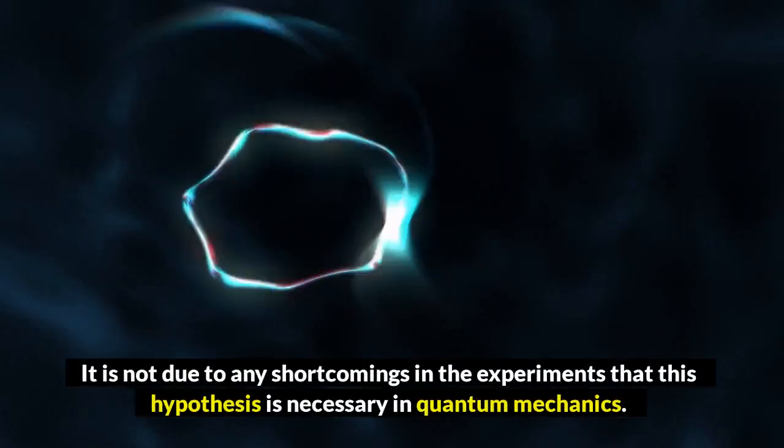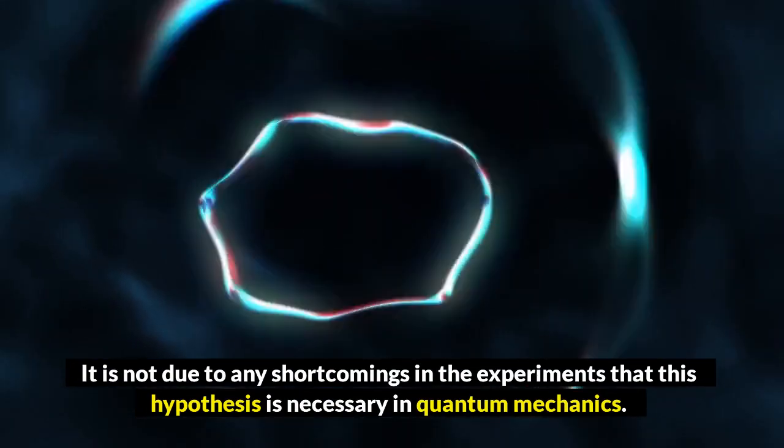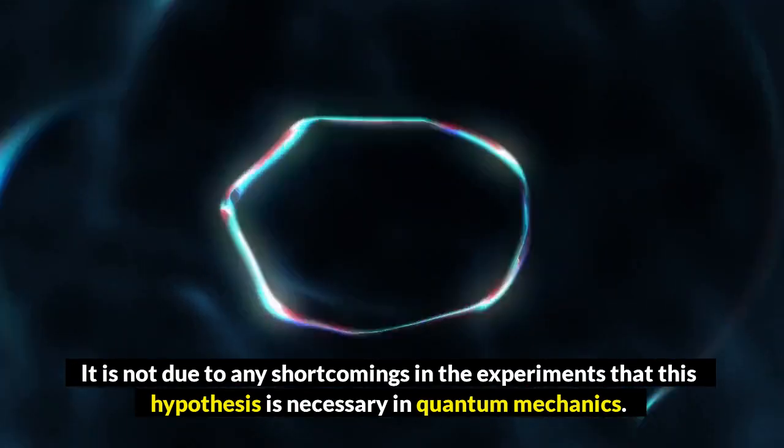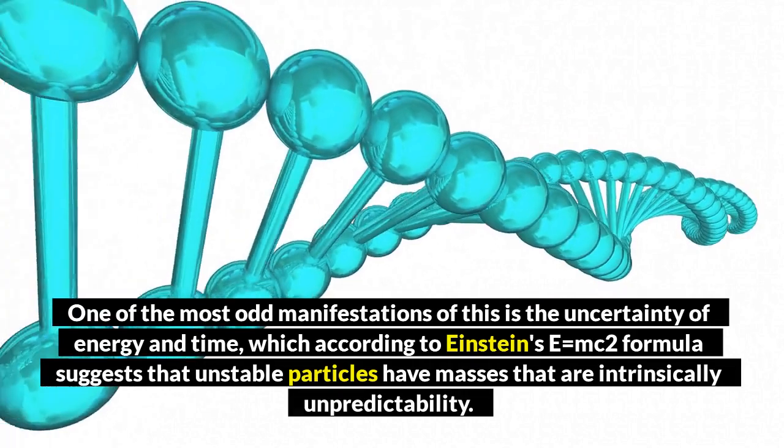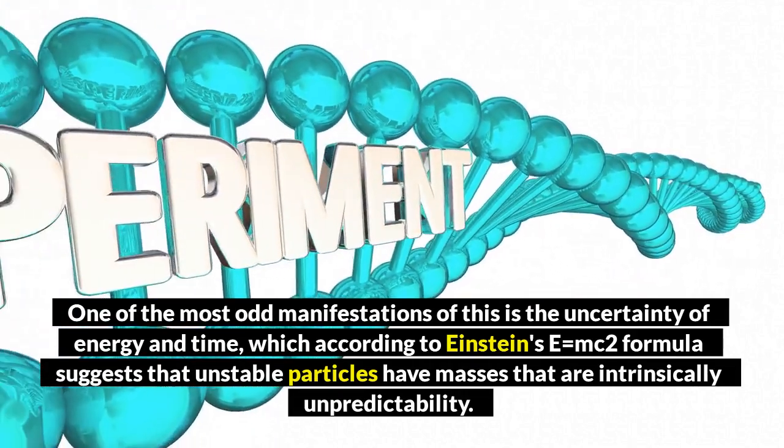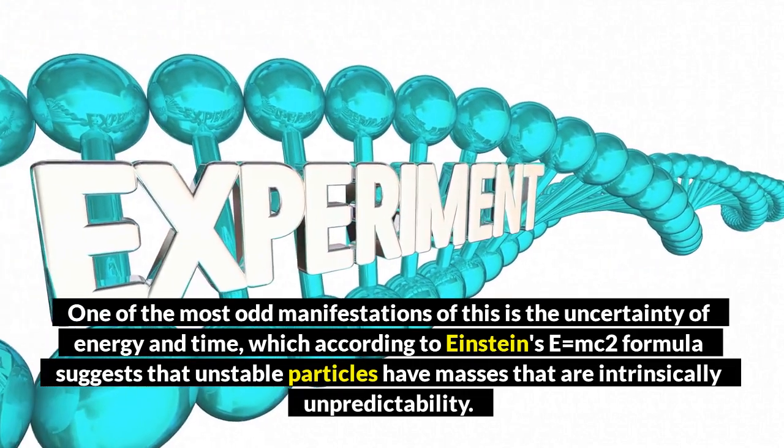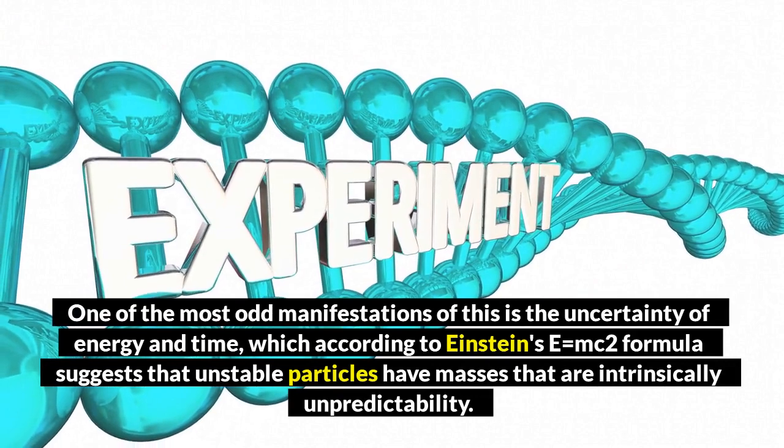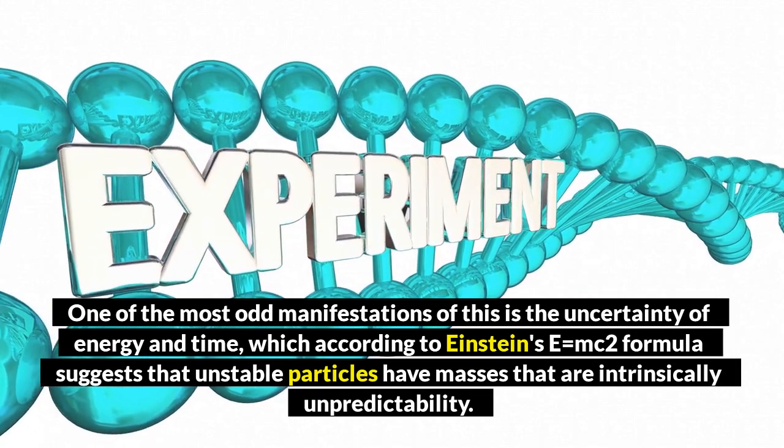It is not due to any shortcomings in the experiments that this hypothesis is necessary in quantum mechanics. One of the most odd manifestations of this is the uncertainty of energy and time, which according to Einstein's E equals MC2 formula suggests that unstable particles have masses that are intrinsically unpredictable.